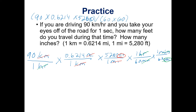The parentheses around 60 times 60 is particularly important. If you don't put it in parentheses, your calculator will multiply the first three numbers, divide by 60, and then multiply everything by 60 — that's not what you want. What you want is to multiply everything on top and then multiply 60 by 60, and divide what you got on top by what you got from 60 times 60. Make sure you're putting parentheses there so your calculator does the operations you intend.